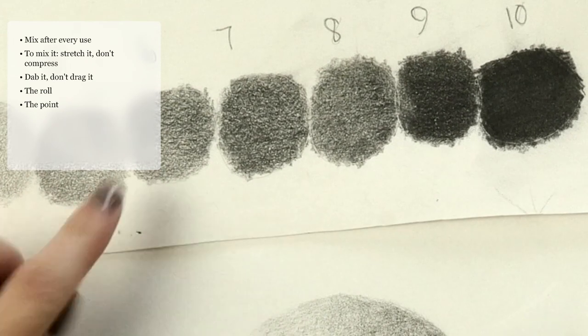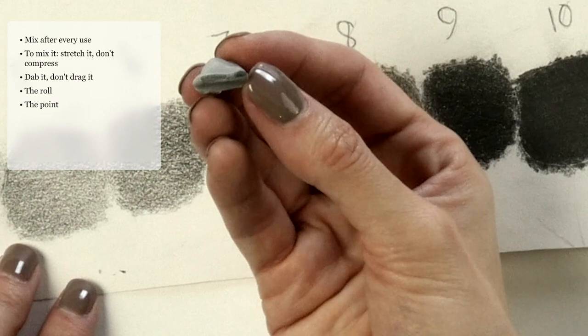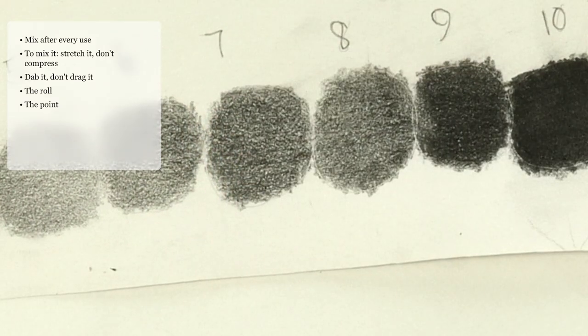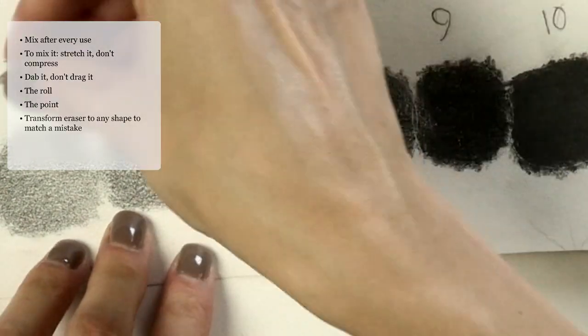Then I'm going to pull that up again and knead that in because I don't want to transfer any value to a new spot. You can also shape your kneaded eraser into any shape—you can see I had a line there that I just pulled off. You can transform it into any shape and lift anything off that you want.